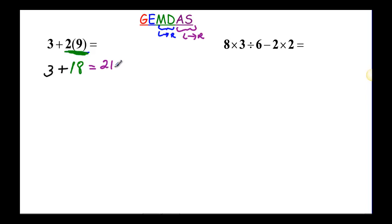Let's try the next problem. Again, we start with grouping symbols and we don't have any. Then we look at exponents — there are no exponents in this problem. Then we do multiplication and division as we go across. I have to do this multiplication before I can do that division or the next multiplication. So 8 times 3 is going to be 24, then I will divide that by 6, then I will subtract, and then I will have 2 times 2.